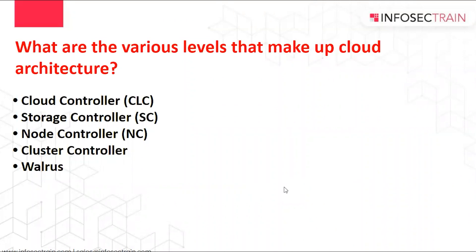What are the various levels that make up cloud architecture? There are five levels: cloud controller, storage controller, node controller, cluster controller, and Walrus. The cloud controller is the primary controller component in charge of managing the entire system and serves as the primary point of access to the cloud for all users and administrators. Storage controller is the Eucalyptus storage service implemented in the cloud interface. Node controller is responsible for updating node objects when new servers are created. Cluster controller keeps all instances of the virtual network running. Walrus is the controller that sends excess messages to Eucalyptus storage devices.